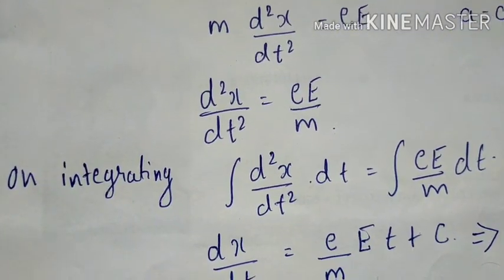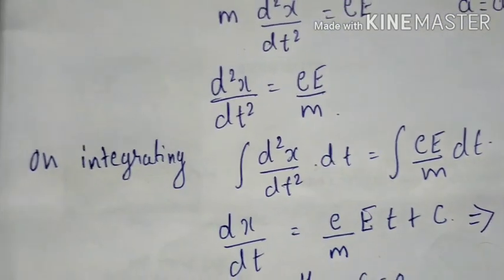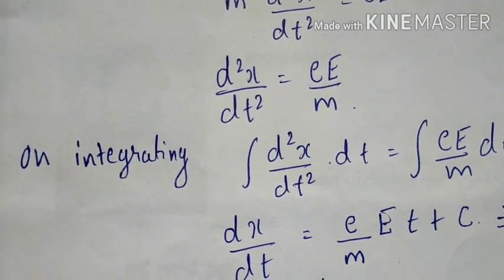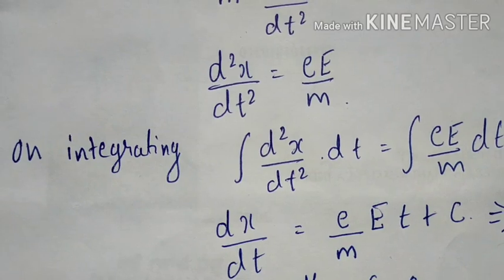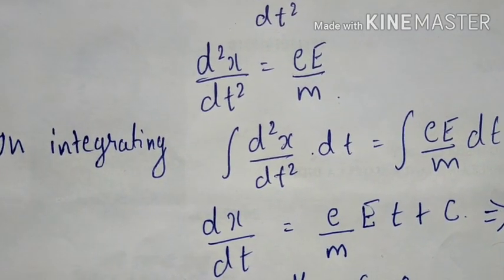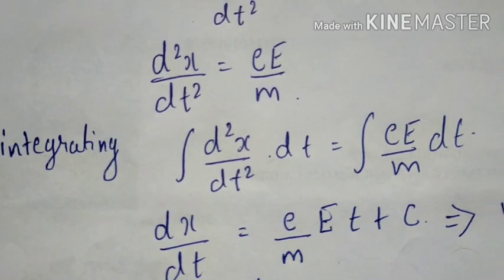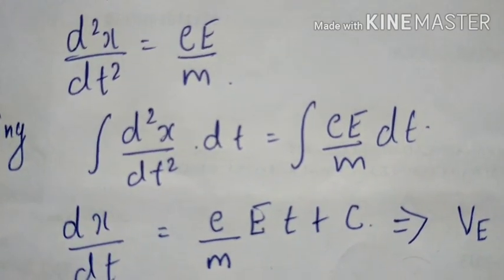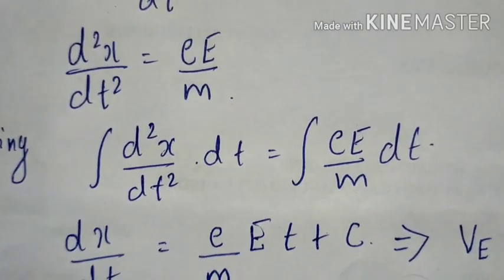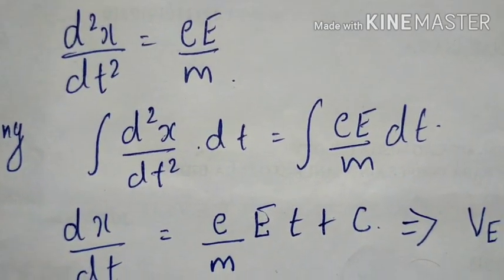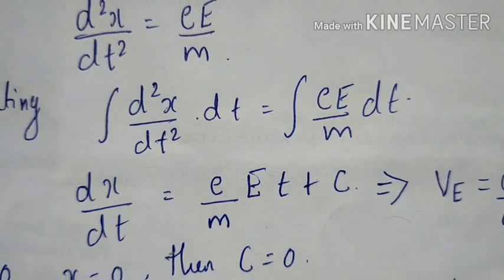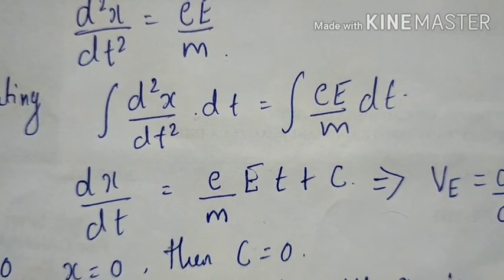This is a continuation of the expression for electrical conductivity. We now take the integration part. On integrating the previous expression, it becomes: the integral of (d²x/dt²) dx/dt equals the integral of (eE/m) dt.